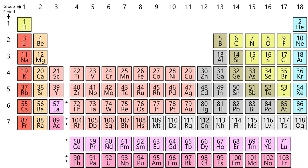The first ionization energy is the energy it takes to remove one electron from an atom; the second ionization energy is the energy it takes to remove a second electron, and so on. For a given atom, successive ionization energies increase with the degree of ionization. For magnesium, the first ionization energy is 738 kJ per mole and the second is 1450 kJ per mole. Electrons in the closer orbitals experience greater forces of electrostatic attraction; thus their removal requires increasingly more energy. Ionization energy becomes greater up and to the right of the periodic table.